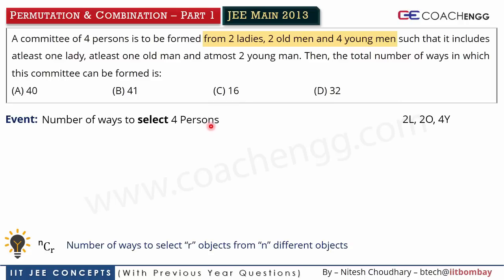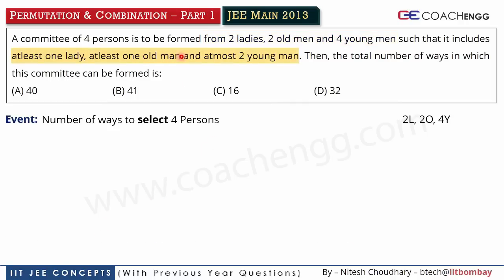If no condition were given in the question — no at least, no at most — then in that case, there are eight persons total, and we simply select four from them. So we would write 8C4 and get our answer directly. You can calculate that value. But the question has given us: at least one lady, at least one old man, and at most two young men.